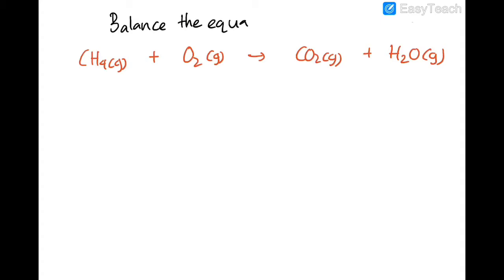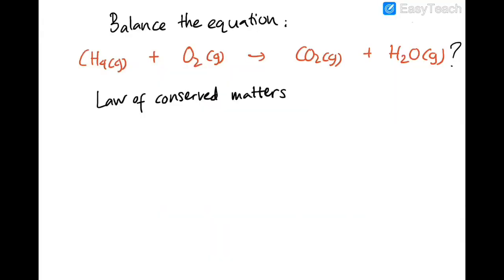Now we have to balance this chemical reaction equation. According to the law of conservation of matter, matter can't be created nor destroyed. Therefore, the number of carbon, hydrogen, and oxygen atoms on the reactant side must be exactly the same as on the product side. For carbon, there is one on the reactant side and one on the product side — so carbon is already balanced.